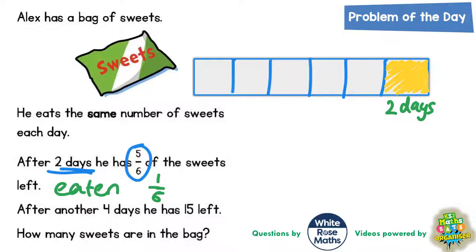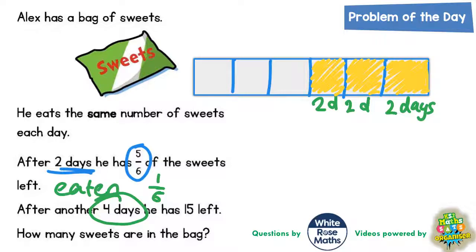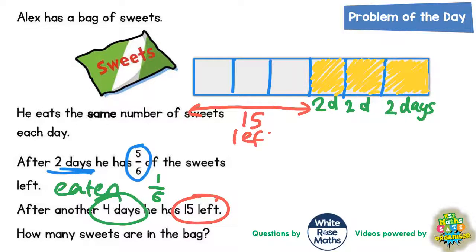After another four days he's got 15 left. If one section on this bar is worth two days, another four days is going to be another two sections — because this section would be worth two days and this section would be worth two days. So after another four days, that two days is gone and that two days is gone. He's got 15 left, which means the amount he's got left must be these three sections on the bar.